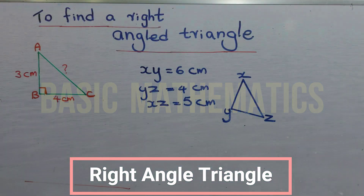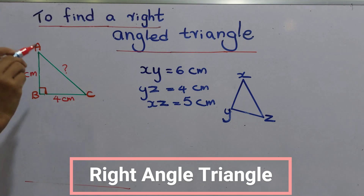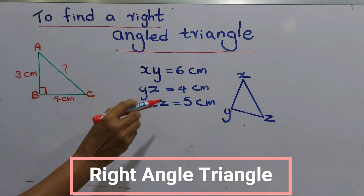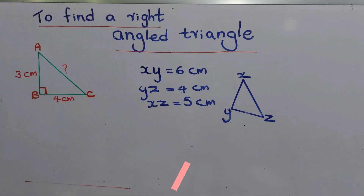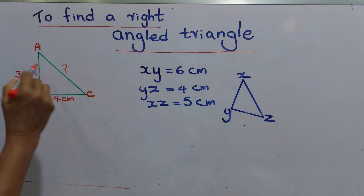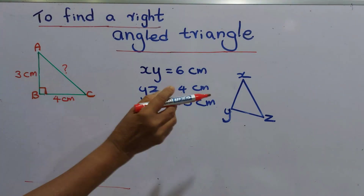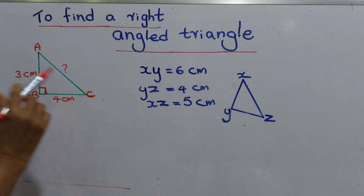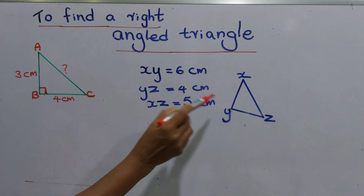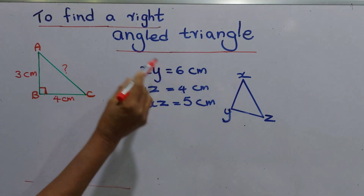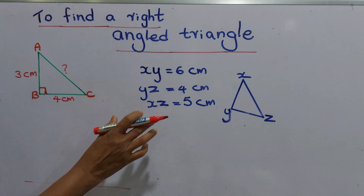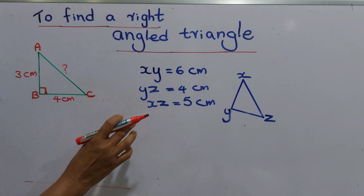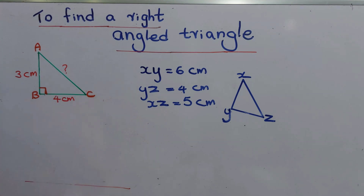In today's lesson we are going to find whether a given triangle is a right triangle or not. For this we have to apply the Pythagoras relationship.